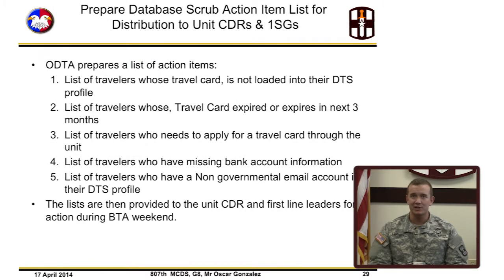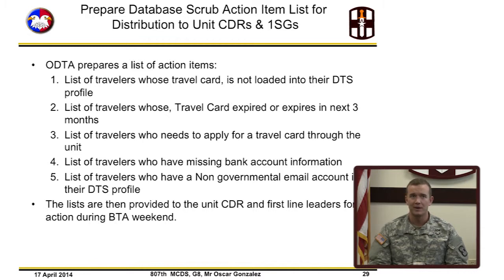Prepare database scrub action item lists for distribution to unit commanders and first sergeants. The list of action items the ODTA prepares should include: 1. list of travelers whose travel card is not loaded into their DTS profile; 2. list of travelers whose travel card expired or expires in the next three months; 3. list of travelers who need to apply for a travel card through the unit; 4. list of travelers who have missing bank account information; 5. list of travelers who have a non-governmental email account in their DTS profile. The lists are provided to unit commanders and first-line leaders for action during battle assembly weekend.